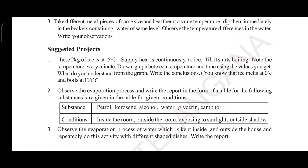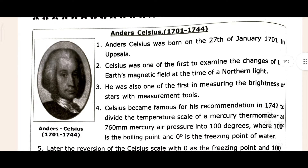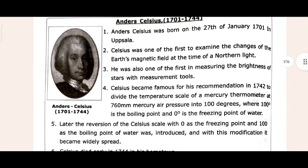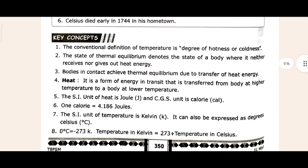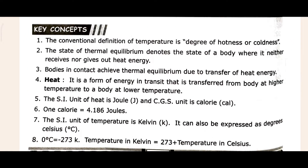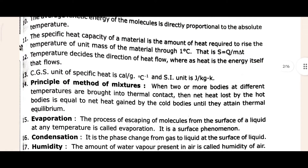Now let's move to the answer sheet. This is Chapter 11 - Heat. We already showed the questions, and now we will see the answers. This answer sheet also mentions the main scientist of this chapter — you can write that if you want, otherwise just skip it. After that, come to the Key Concepts section, which gives a brief knowledge of the main points from your textbook. Then we have keywords with their word meanings, followed by question answers, project work, and experiments.